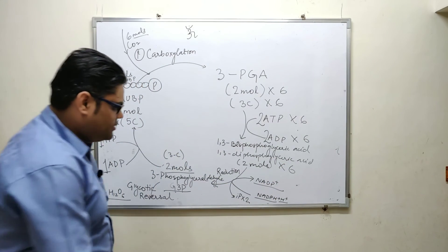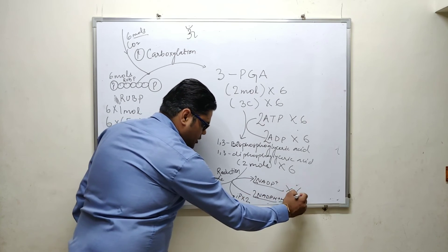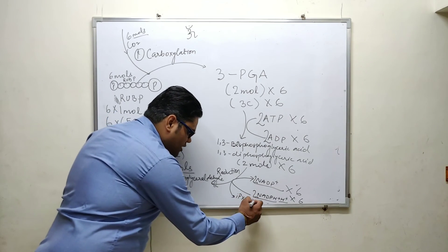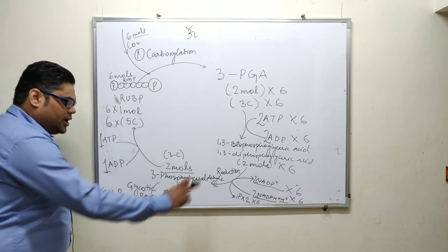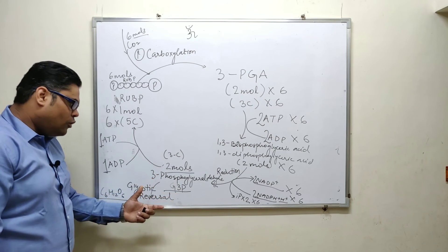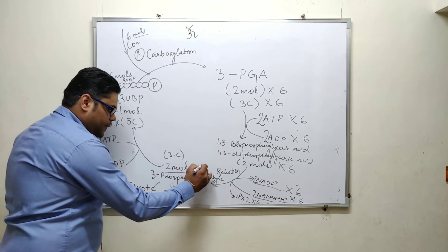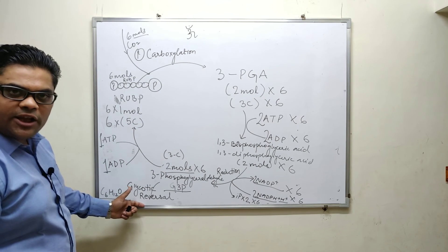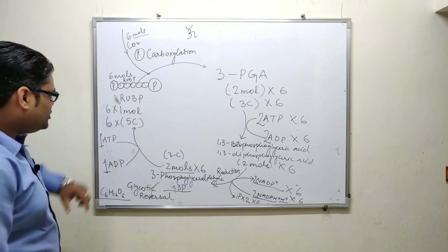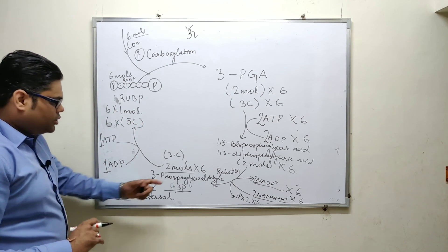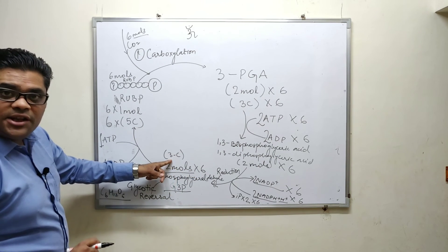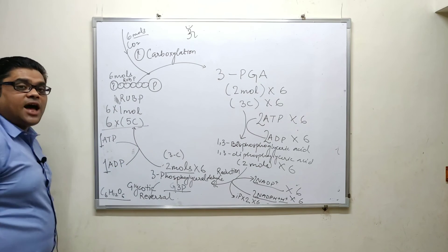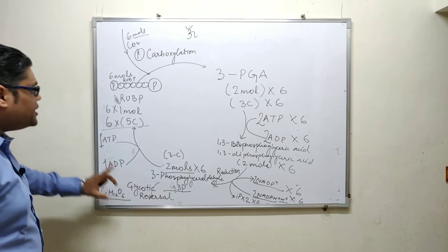12 moles of 1,3-bisphosphoglyceric acid are formed. Then 12 moles of NADPH give rise to 12 moles of NADP⁺ plus 12 moles of inorganic phosphate. This reduces the compounds to form 12 moles of G3P (glyceraldehyde-3-phosphate). Of the 12 moles: 2 moles go to glycolytic reversal to form glucose (6 carbons), and the remaining 10 moles (30 carbons) are regenerated back into RuBP using 6 more ATP.